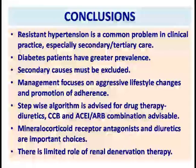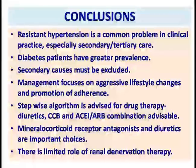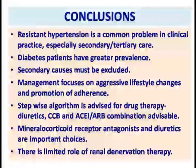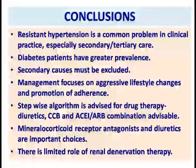In conclusion, resistant hypertension is a common problem in clinical practice, especially in secondary and tertiary care. Patients with diabetes have a greater prevalence of resistant hypertension. We must exclude secondary causes — almost 50–70% of patients have a secondary cause. The commonest causes are non-adherence, interfering medication, and obstructive sleep apnea. We need to focus on aggressive lifestyle changes, promote adherence, and follow a stepwise algorithm for drug therapy: diuretics, calcium channel blockers, ACE inhibitors or ARBs, then add mineralocorticoid receptor antagonists. With current evidence, there is a limited role of renal denervation therapy. Thank you.